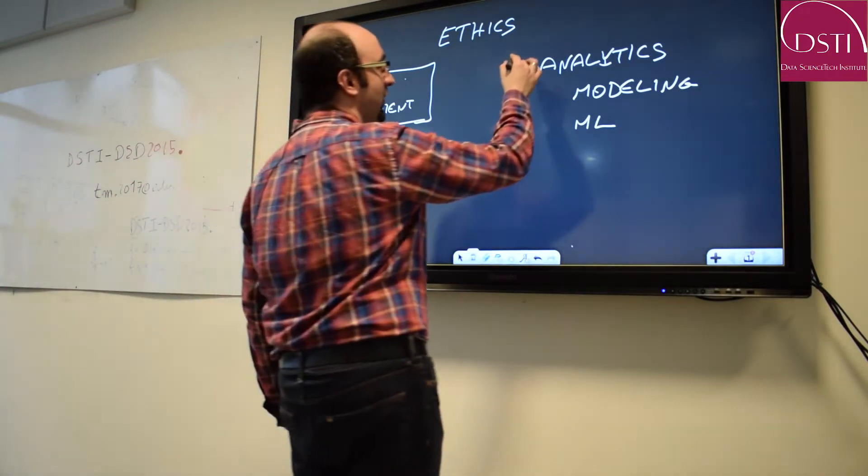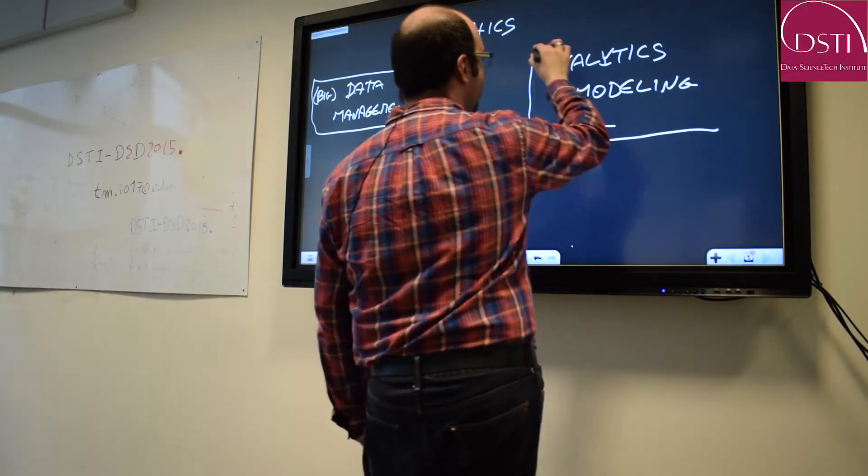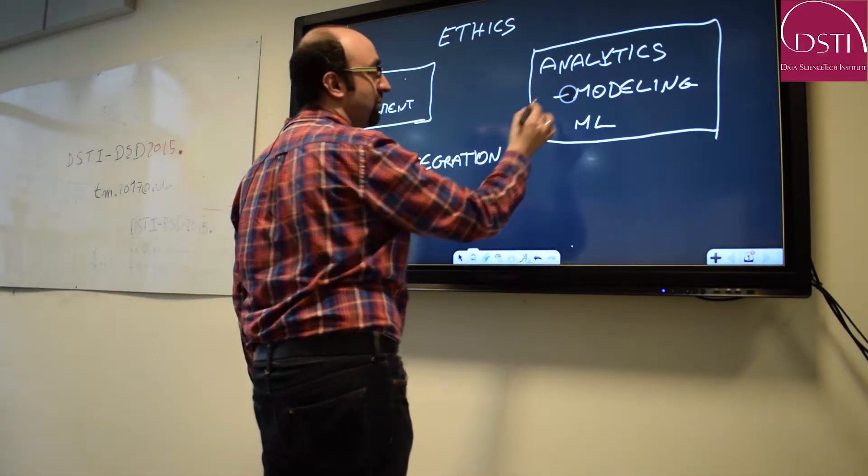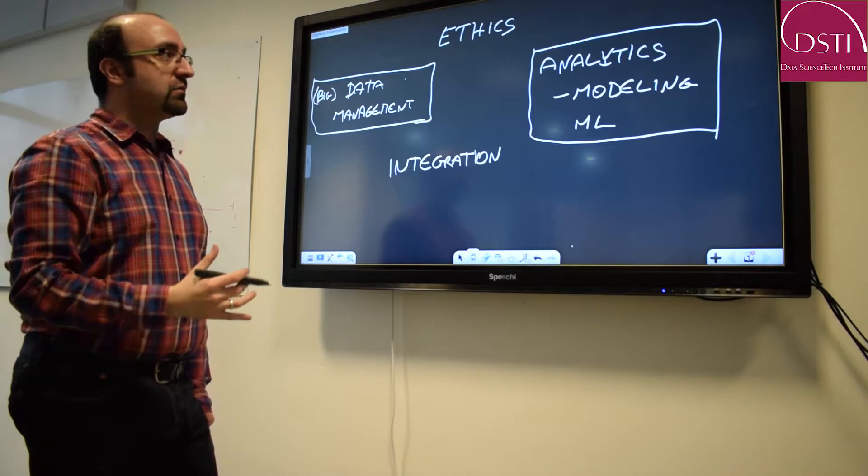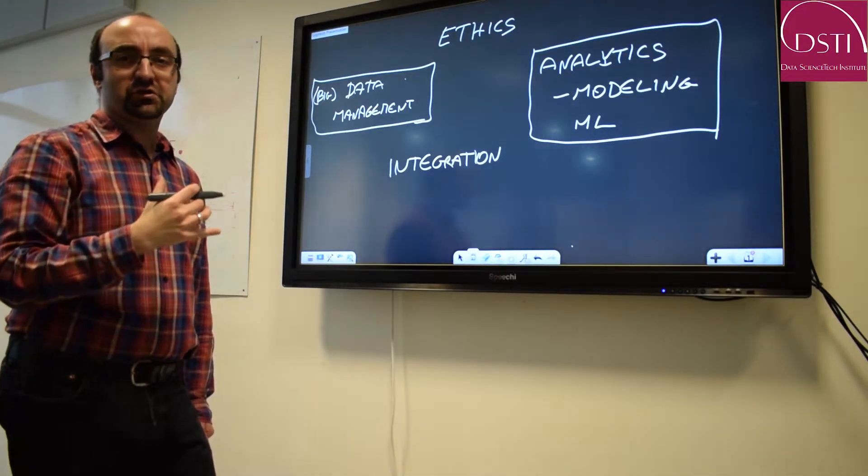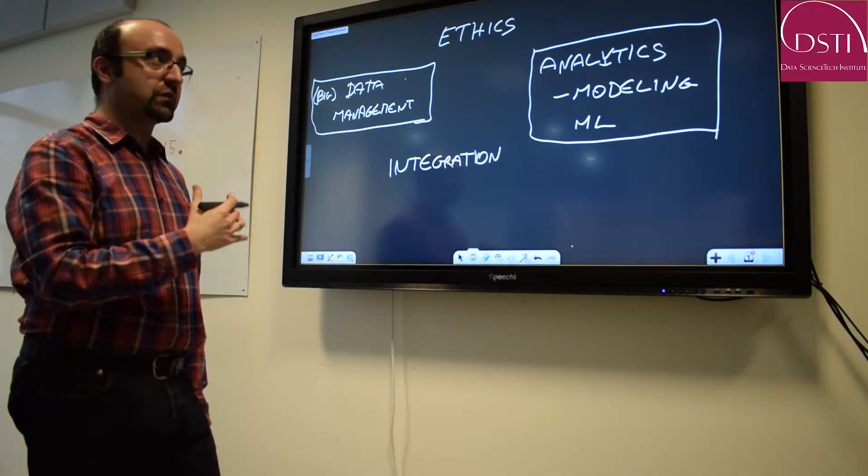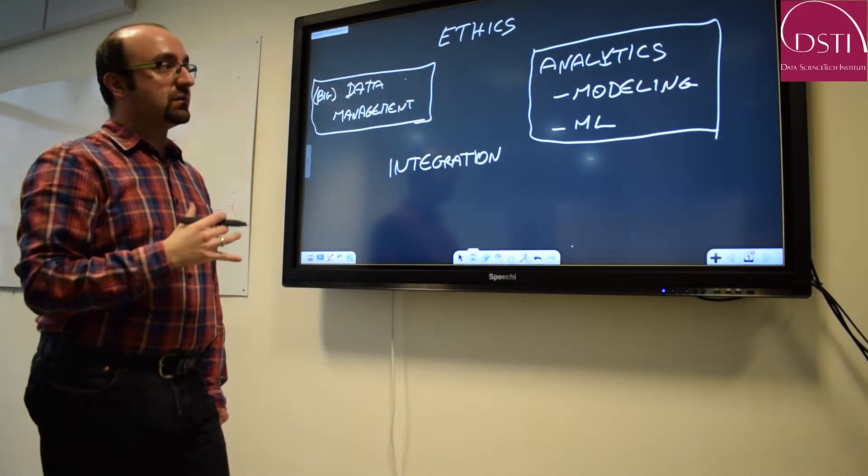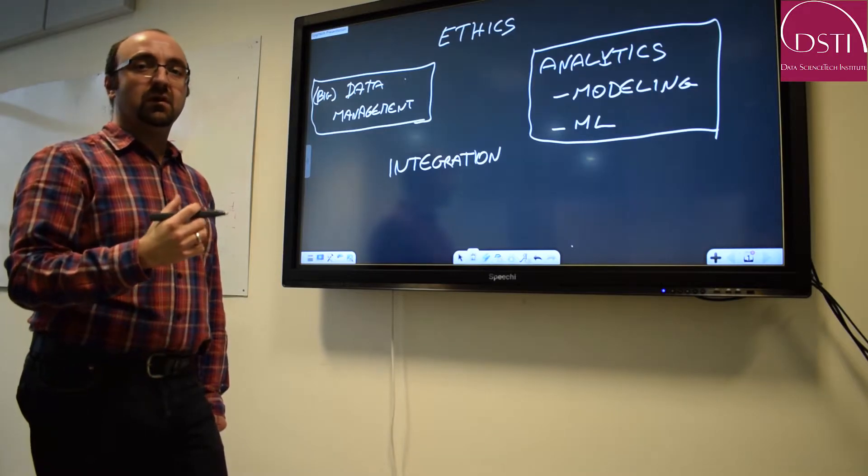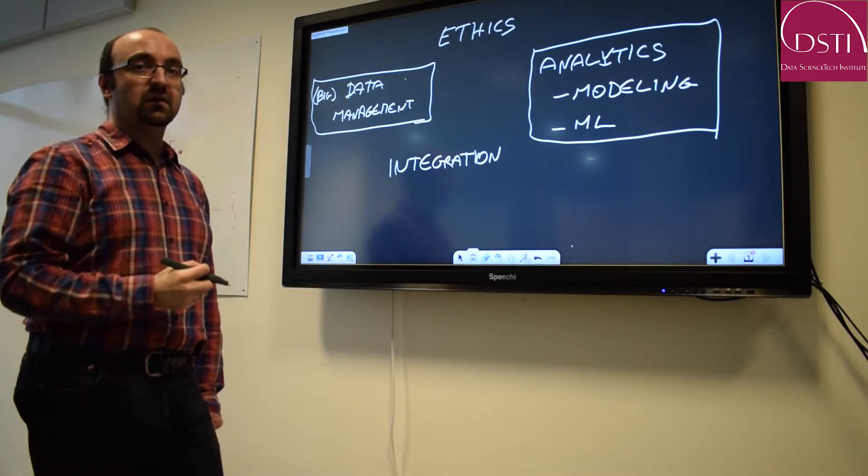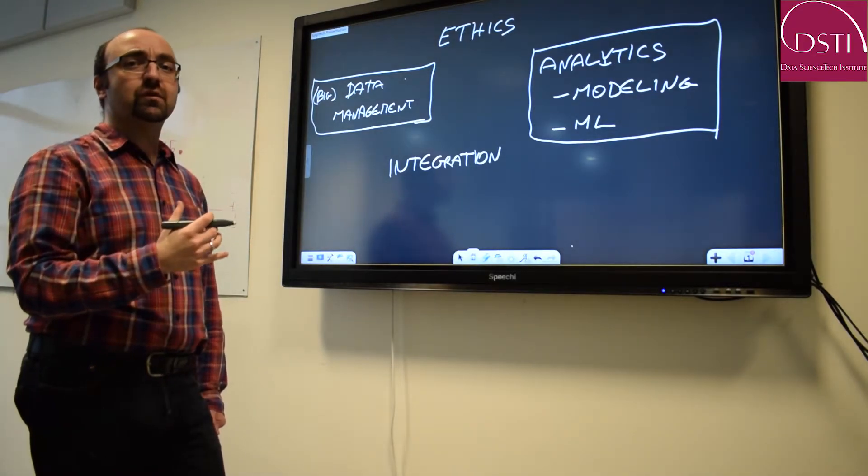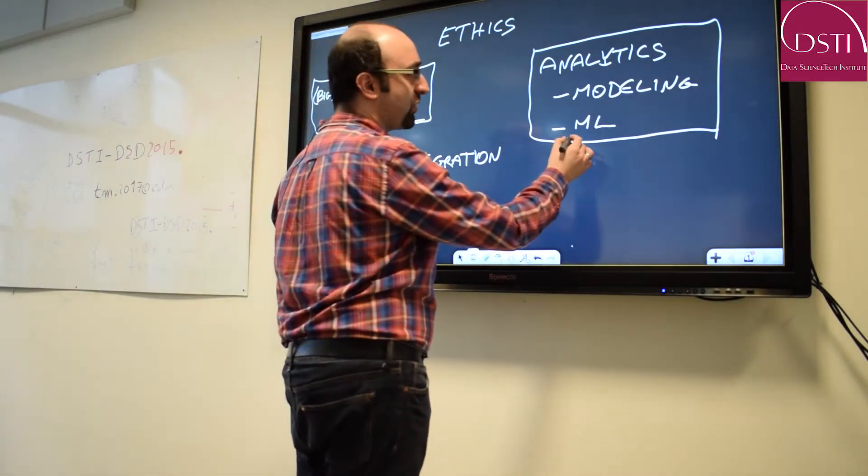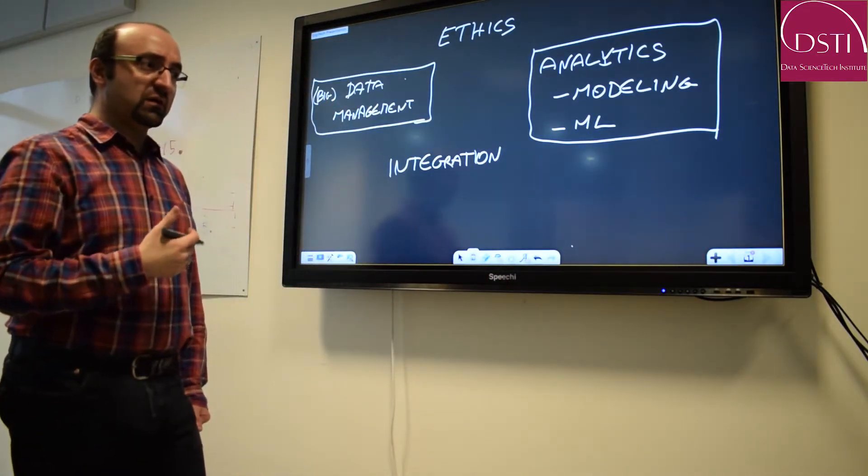The second area of expertise that's involved in data science is that of analytics. By analytics I mean statistical modeling that is about understanding the relationship between different random variables, statistical variables in the real world, and machine learning that is focused on making predictions and training machines to make predictions about a phenomenon that we might not necessarily understand from a statistical point of view, but about which we can make predictions that allow us to take informed decisions.